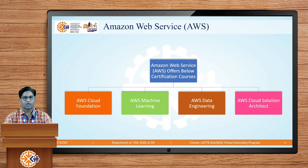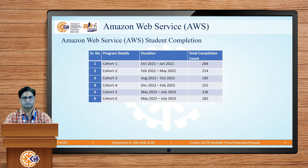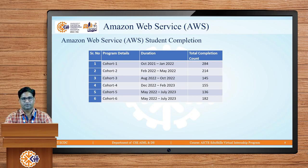Now let's explore how many students have participated in these certification courses across the last six internship programs since 2021. In Internship Program 1, 284 students successfully completed the AWS certification course. In Internship 2, 214 students completed it. In Internship Program 3, 145 students participated and completed the AWS certification. In Internship Program 4, 155 students enrolled across all four courses and completed the AWS certification.